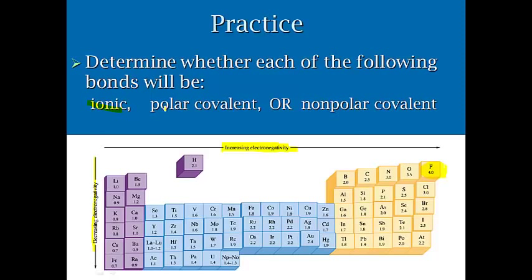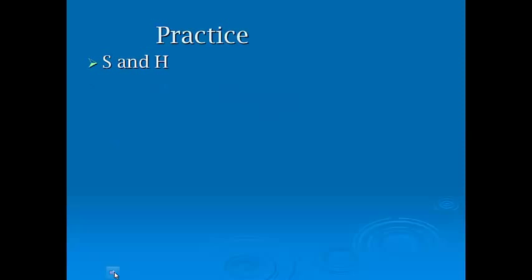We're going to use electronegativity values to determine if something is ionic, polar covalent, or nonpolar covalent. You'll have a chart, and you will have received a chart by now, and you have to fill these numbers in. If you find sulfur and hydrogen on your electronegativity chart, you won't have to memorize electronegativities, they'll be given to you. You find the difference is 0.4, which puts it into the polar covalent category.